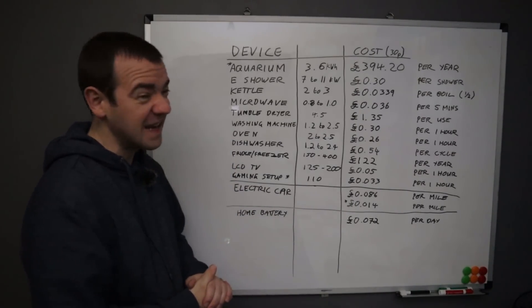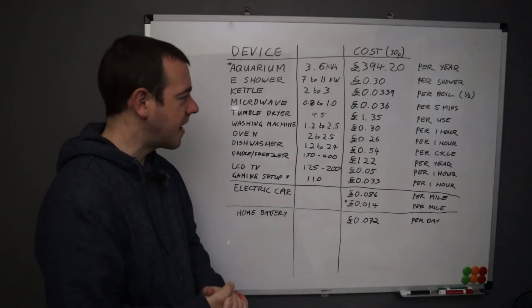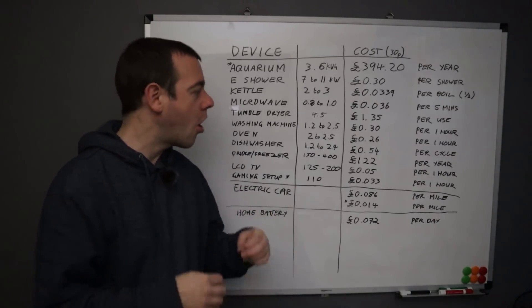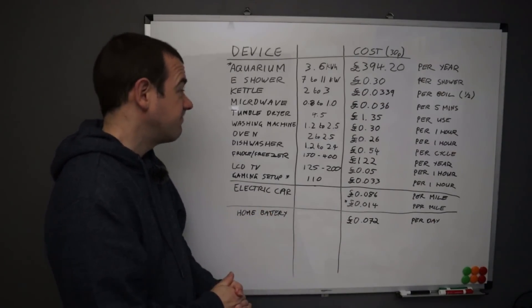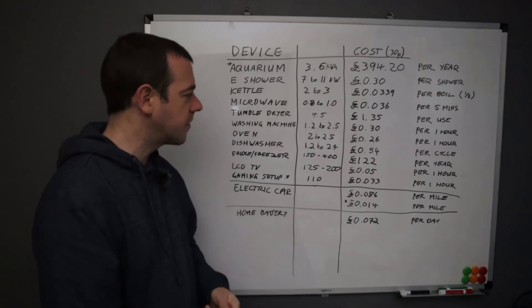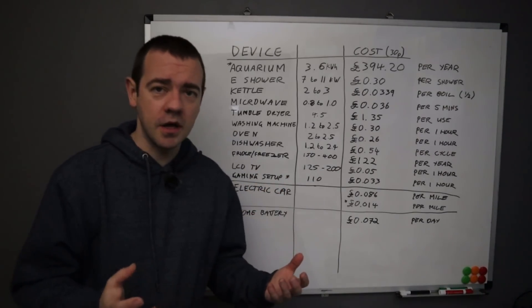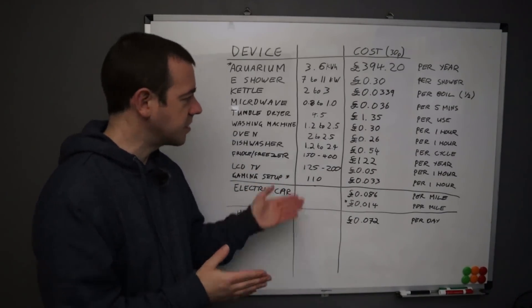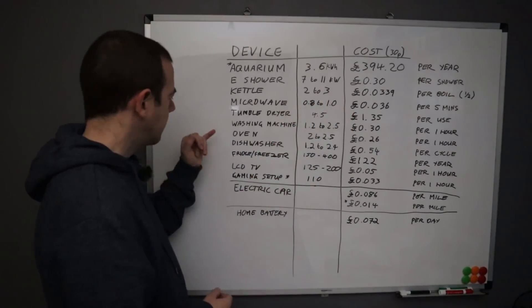So if money is tight, this is the first thing for me to reduce. Washing machine, again you can't really do without one of these. 30 pence for each hour that's on, again on average. Not too bad I think really. Make sure they're full loads of course, and of course you can run them on economy modes which can sometimes reduce this a fair bit.